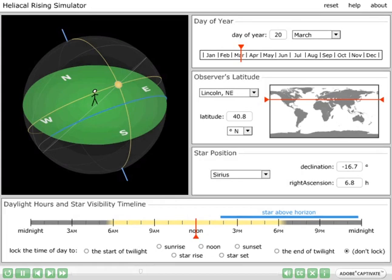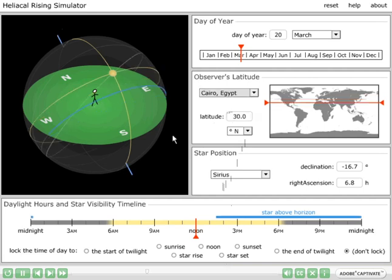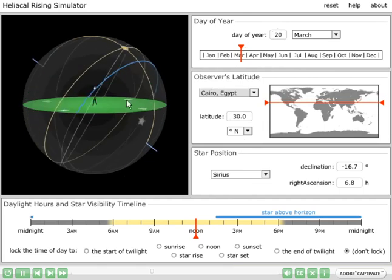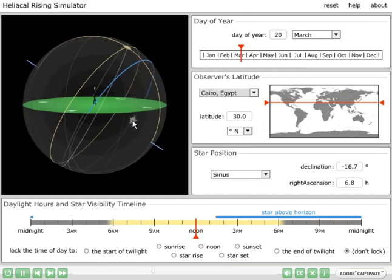Let's use the simulator to explore the heliacal rising of Sirius from Egypt. Note that the star coordinates by default are already set to Sirius, and we will change our latitude to Cairo, Egypt. So we are now seeing the sky around March 20th, near noon since we see the sun on the observer's meridian from Cairo. Note that the star Sirius is still below the eastern horizon, so it has not yet risen at noon.